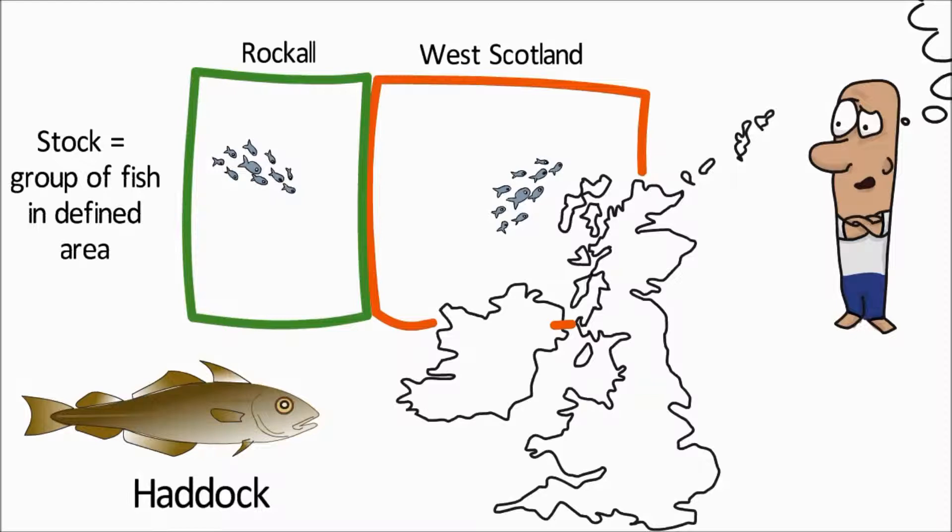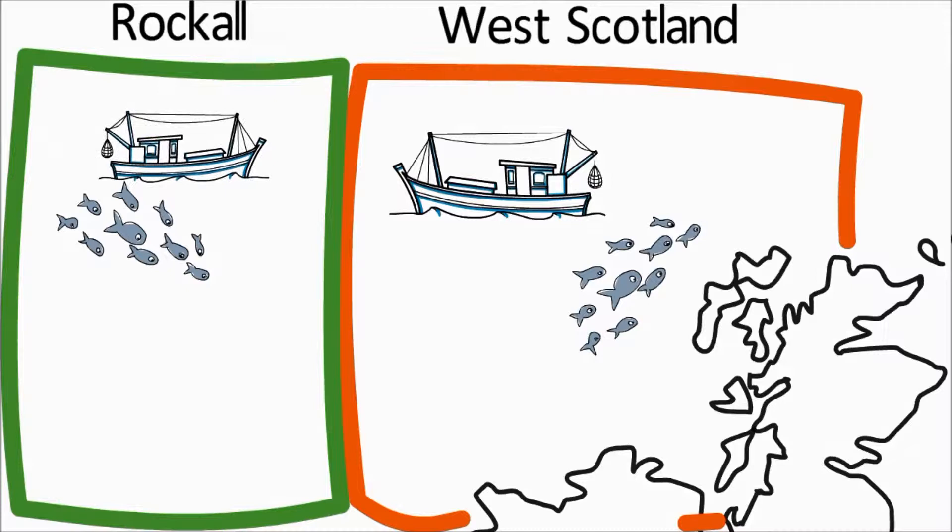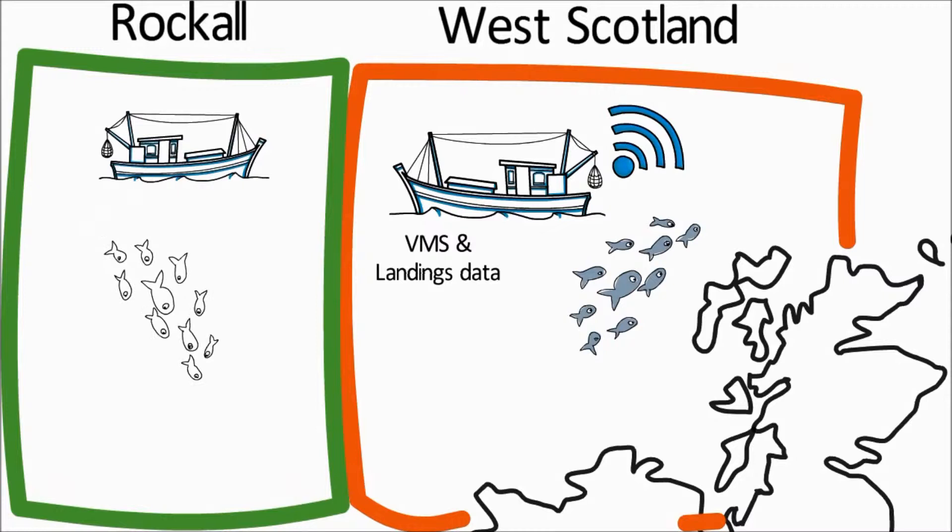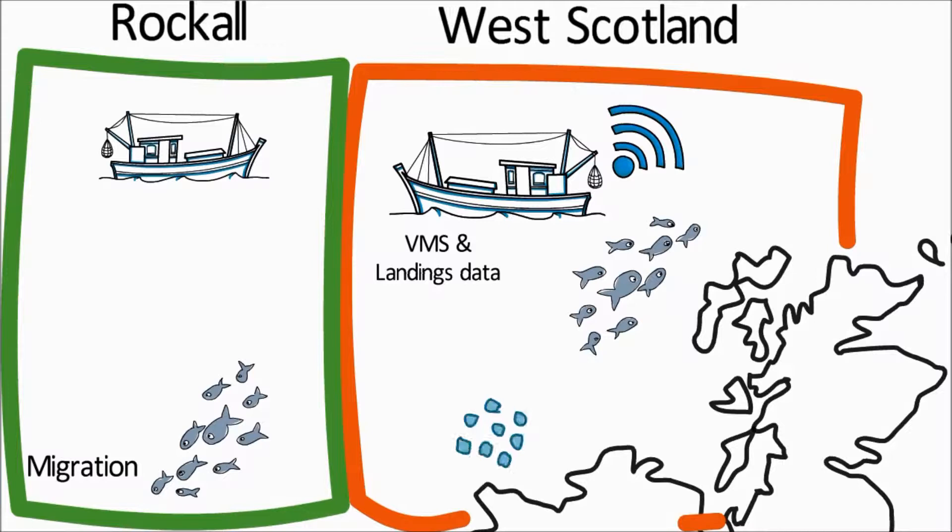When deciding on stock boundaries, the location of fishing grounds is a key piece of information used to identify where one stock ends and another begins, and this can be seen from vessel monitoring and landings data. Scientists also consider the migration patterns of fish and spawning grounds, as well as genetics in some cases.